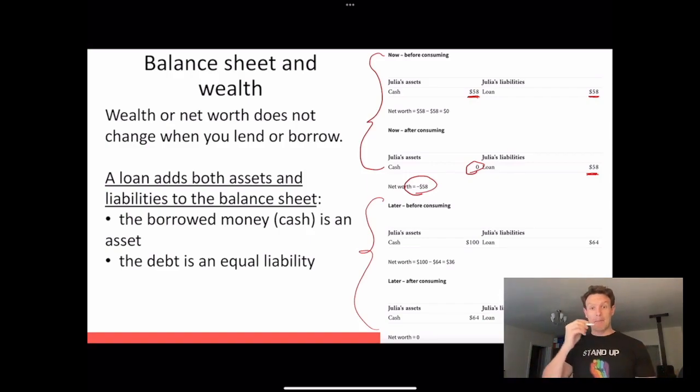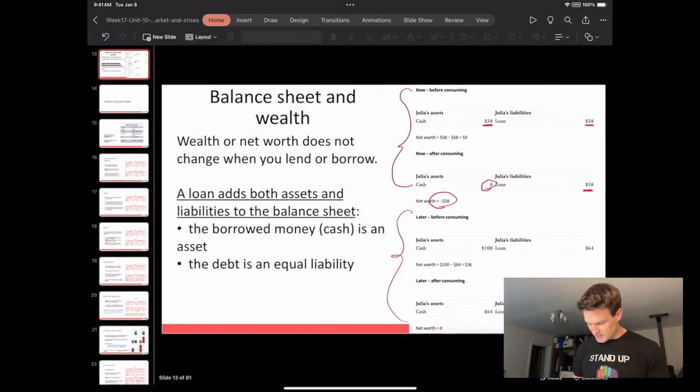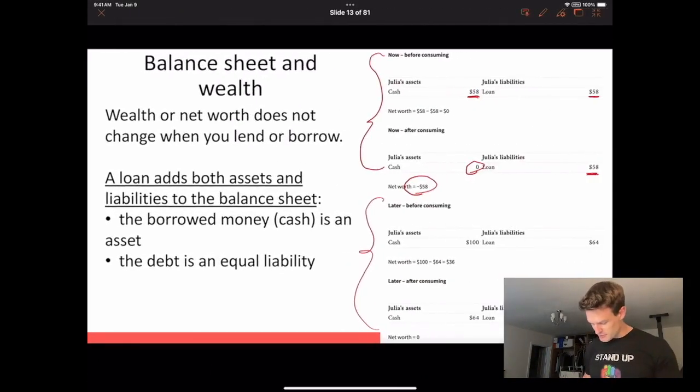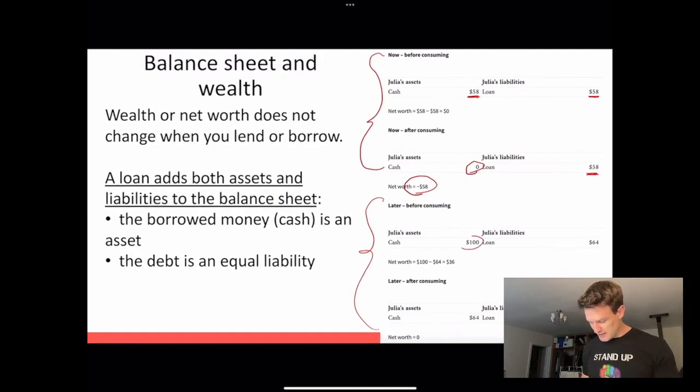In terms of what happens later, before she consumes, we have to think that she gets the $100 worth of income. That's the money that she gets. She gets the $100 worth of income, and then she has the loan on which she now has to pay interest. So she's got an interest payment of $6, which has been added onto that because of the interest rate. What that means is that her net worth is the $100 minus the $64, which is $36.